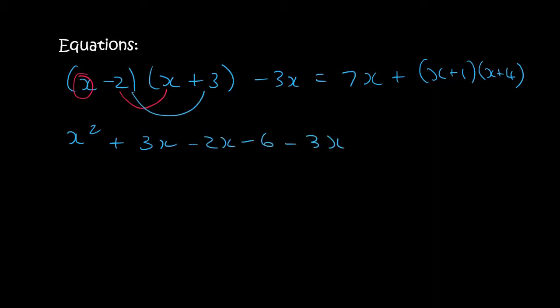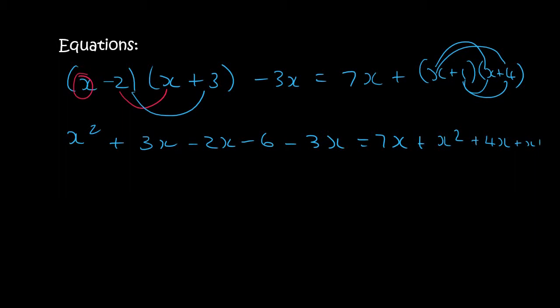Minus 3x equals 7x plus — now we have to do the same on the right side. So x times x is x squared, x times 4 is 4x, 1 times x is x, and then 1 times 4 is 4.